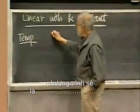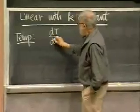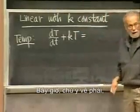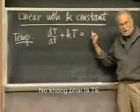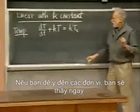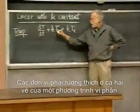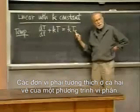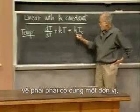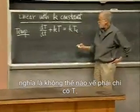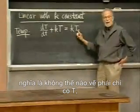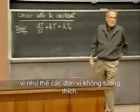The temperature model equation will be dT/dt plus kT is equal to — now notice, on the right-hand side, this is a common error: you don't put T_e, you have to put kT_e, because that's what the equation says. If you think units, you won't have any trouble. Units have to be compatible on both sides of a differential equation.